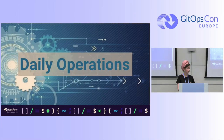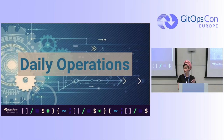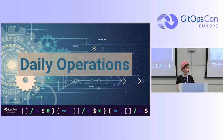We first looked at daily operations and found they are very fragmented. For example, a developer who wants to commit a single change to Git to develop a single feature needs to go through Git, a CI system, a test system, a different service for deployment, and a different system for monitoring in production. Very, very fragmented.